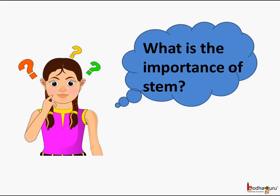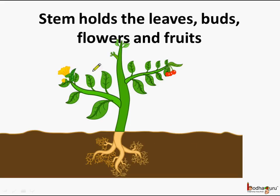The shoot system mainly consists of stem. What is the importance of stem? As you can see in the picture, this is the stem.